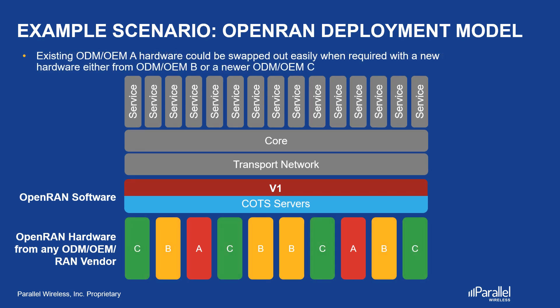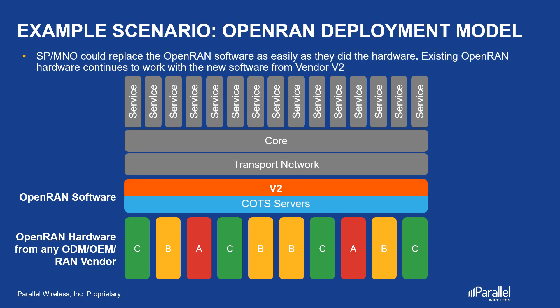Again, the service provider has decided to introduce a new hardware vendor C, as they may have more advanced features, be lighter, consume less power, or any other reason. Again, these should work with vendor V1 software straight out of the box. Now, let's say the service provider is unhappy with software from vendor V1 because the vendor roadmap was not aligned to their own, or they do not have advanced features. What they can do is replace vendor V1 with V2. Because of open interfaces, the hardware from vendors A, B, and C should work with software from vendor V2.